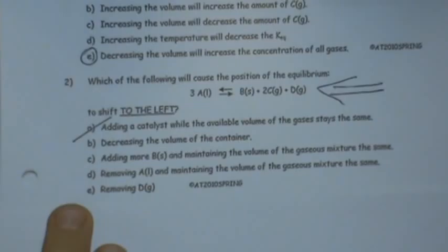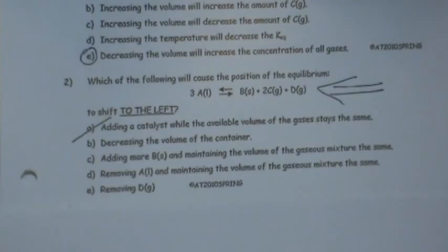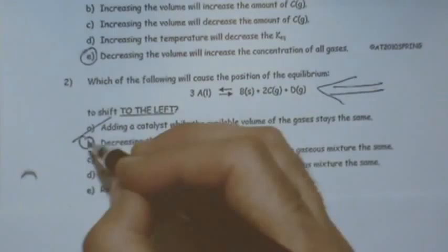Decreasing the volume of the container. If you decrease the volume of the container, what will happen? Let's see. You have liquid, solid, gas, gas. Okay, so I decrease the volume. I compress it, right? What will happen? The pressure will go up. It doesn't like it. So how is it going to reduce the pressure? To have less particles, less gases. So it's going to go this way. So maybe it looks like it's going to be the answer. So now we're going to confirm it.